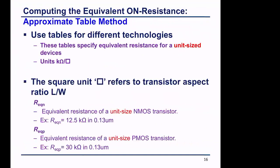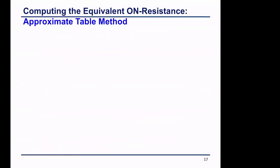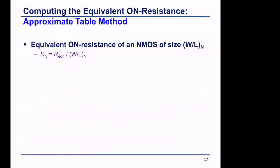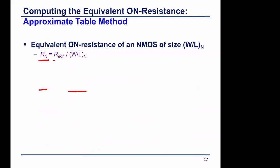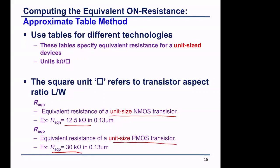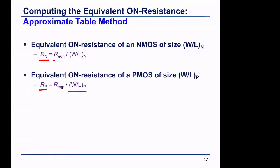For a unit-size NMOS transistor, R-square is 12.5 kΩ, and for a unit-size PMOS transistor it is 30 kΩ. So for any RN, it will be R-square over (W/L). For any RP, it will be R-square-P over (W/L)_P. Therefore, RN equals 12.5k over (W/L) and RP equals 30k over (W/L). The equivalent on-resistance is inversely proportional to W/L.